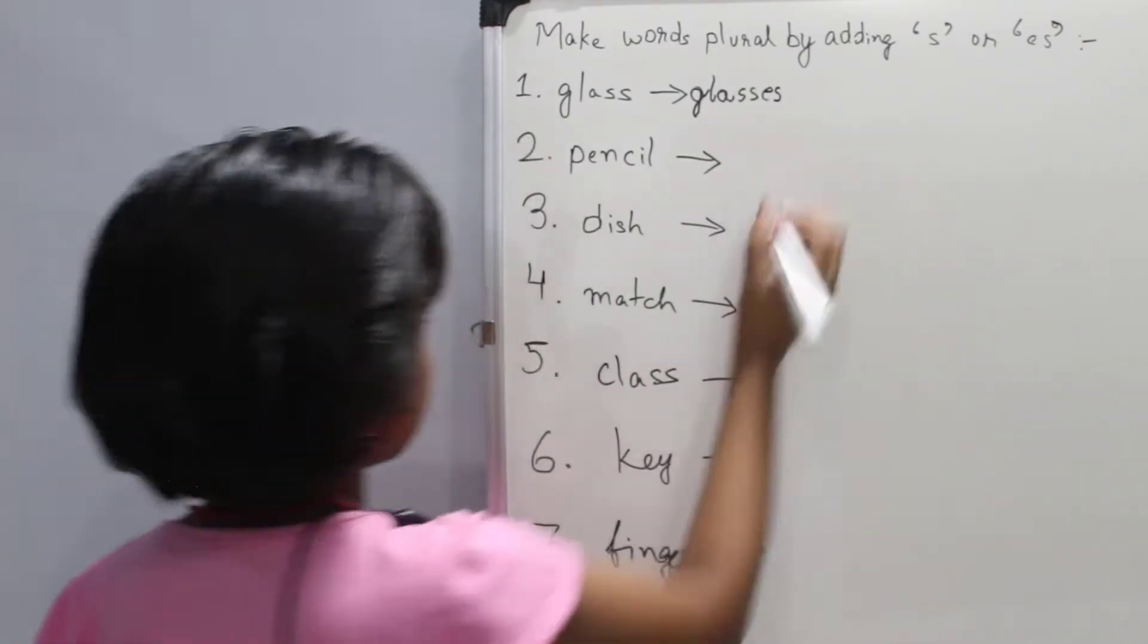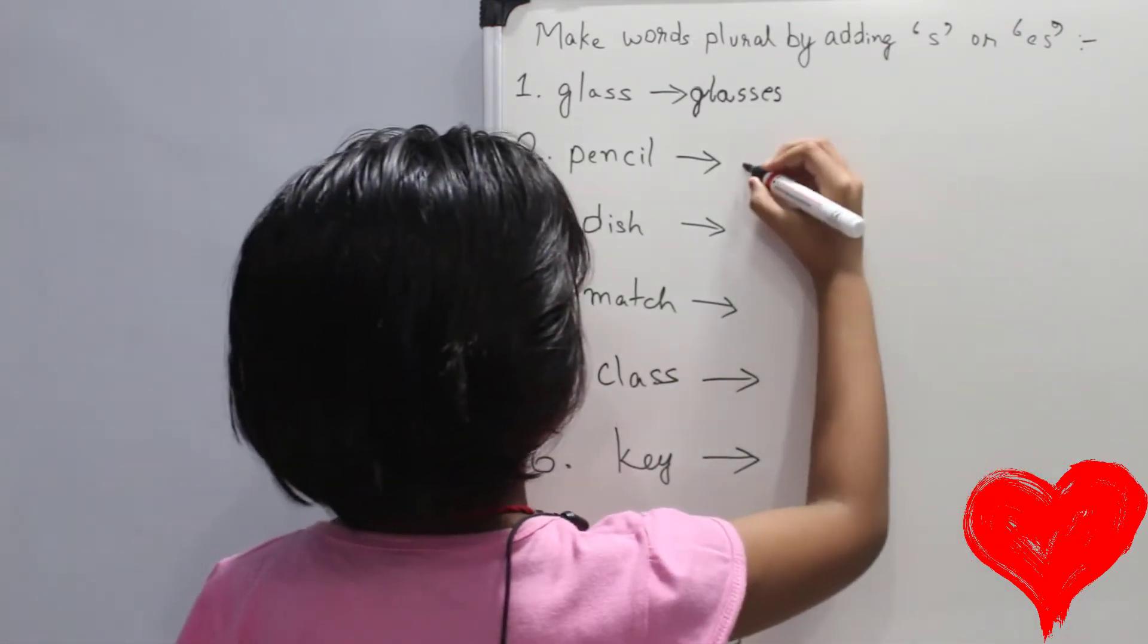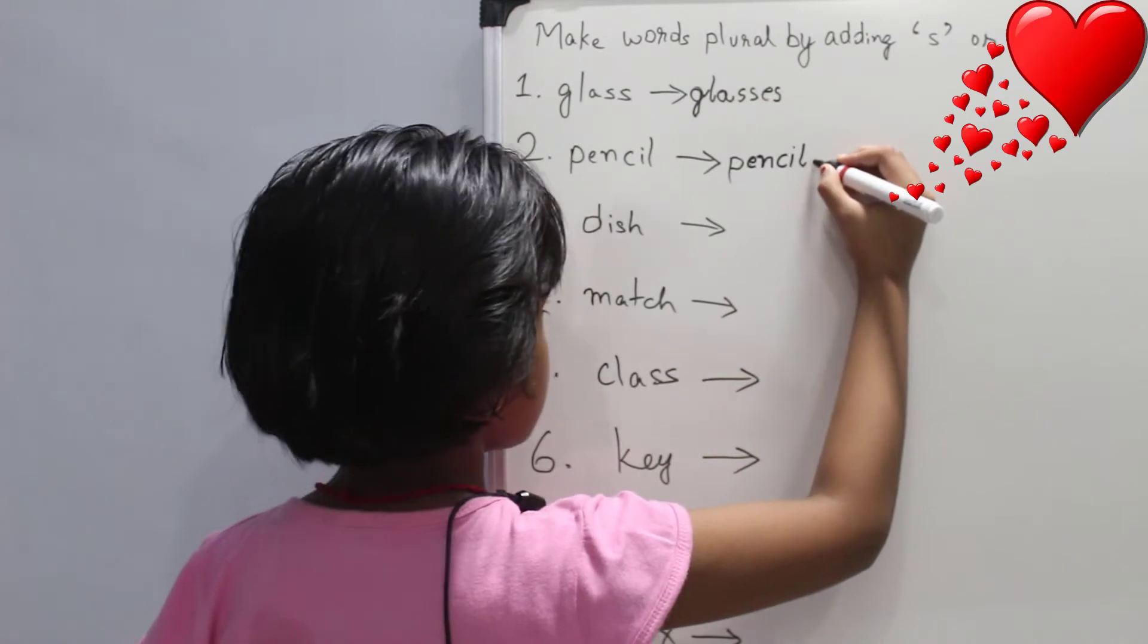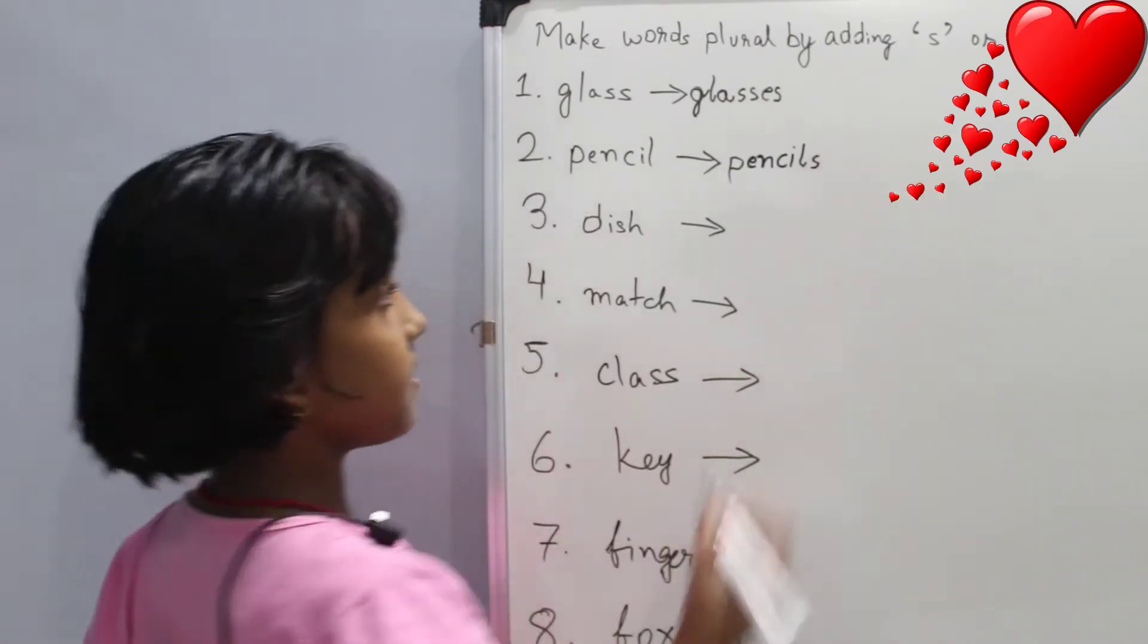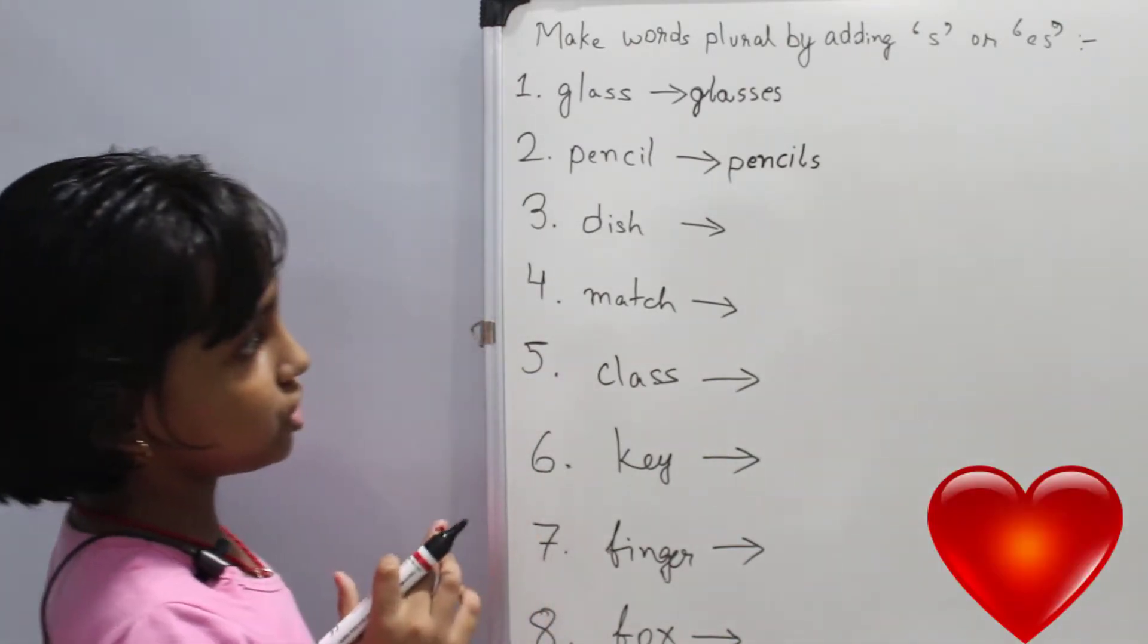So two number question is pencil. So what is the answer? So the answer is pencils. So three question is dish.